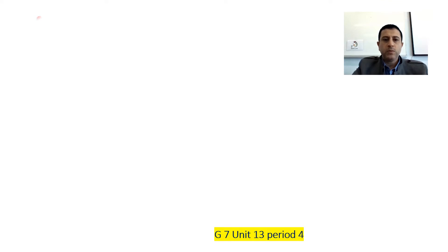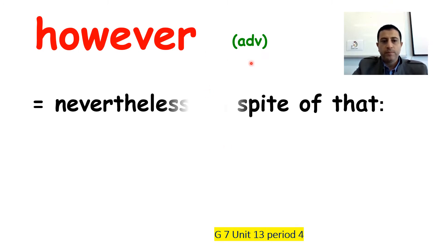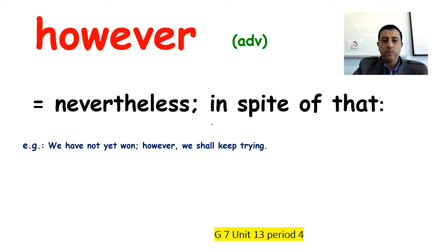The next word is 'however.' However is an adverb. However means 'nevertheless' or 'in spite of that.' An example: We haven't yet won. However, we shall keep trying.